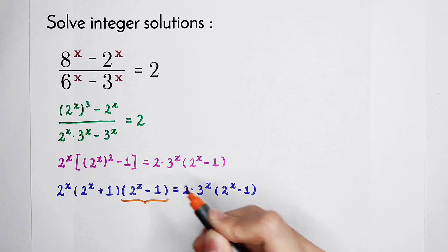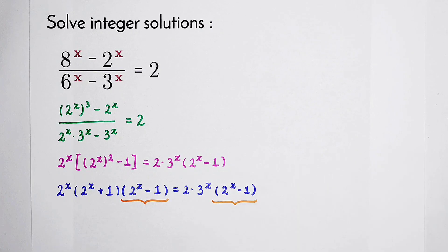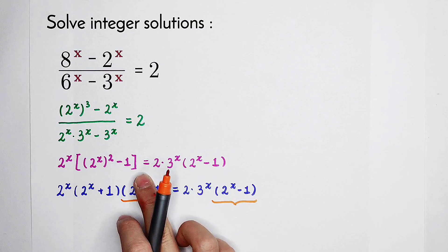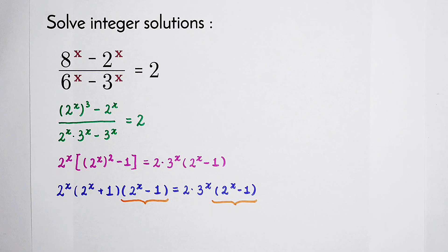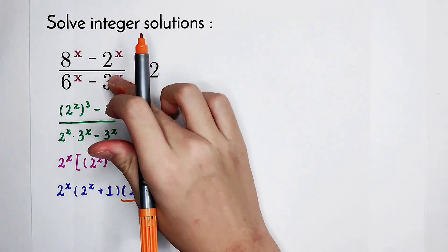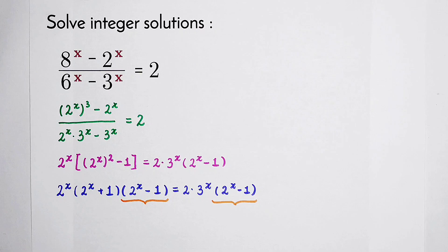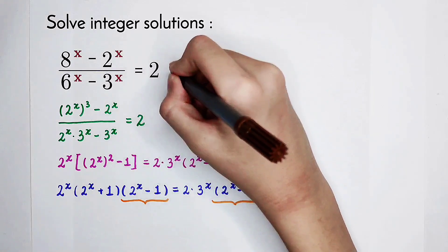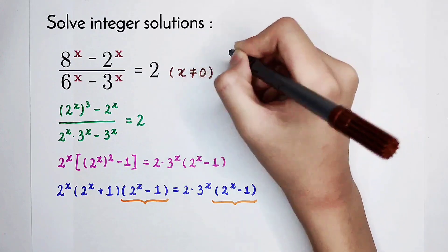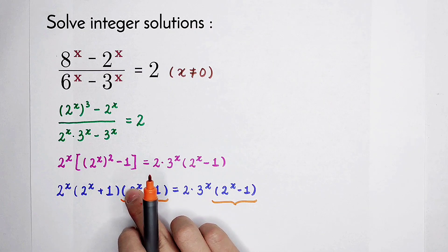All of you must have noticed: 2 to the power of x minus 1 appears on both sides. Can we cancel? The only way to cancel is if it is not equal to 0. But can it be 0? If 2 to the power of x minus 1 equals 0, that means 2 to the power of x equals 1, which happens when x equals 0. But can x be 0? No — because when x equals 0, the denominator 6 to the power of x minus 3 to the power of x becomes 1 minus 1, which is 0. The denominator can never be 0, so x cannot be 0. That means we can cancel 2 to the power of x minus 1 on both sides.